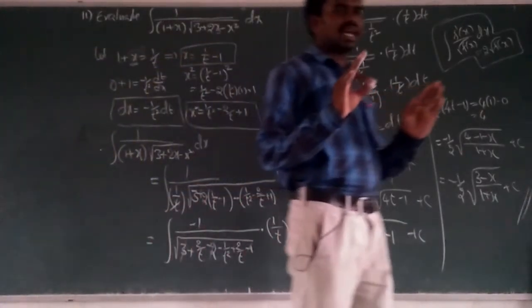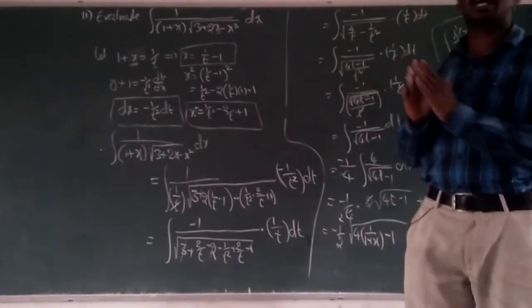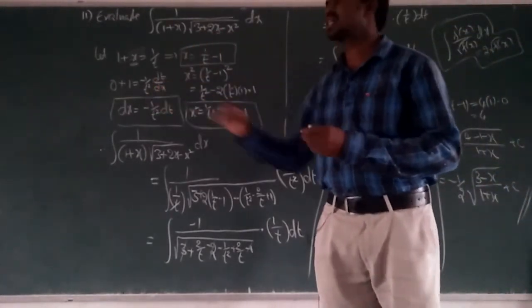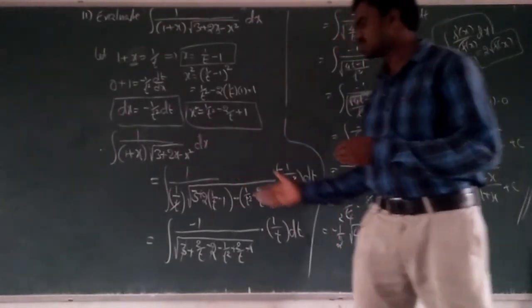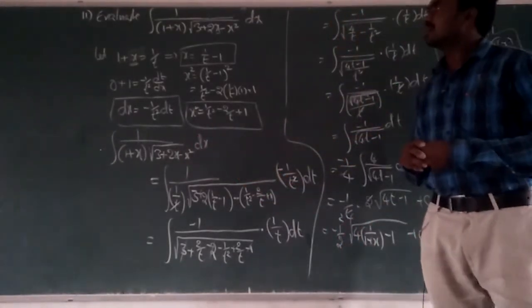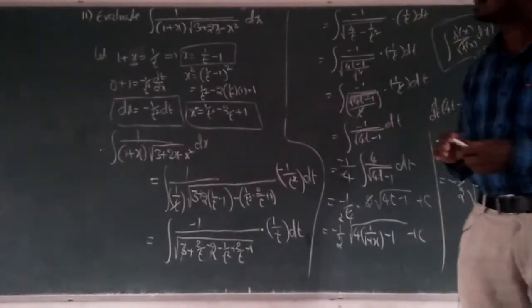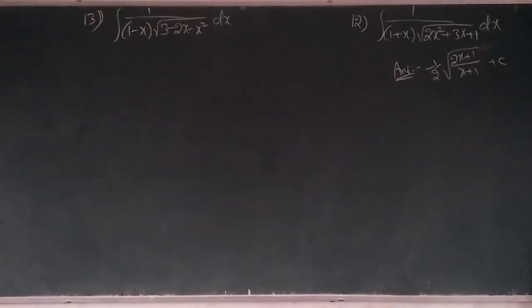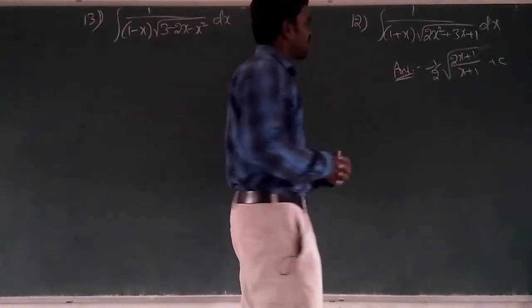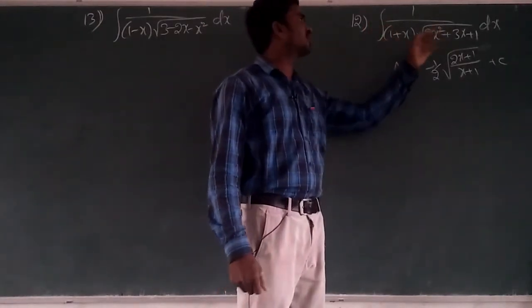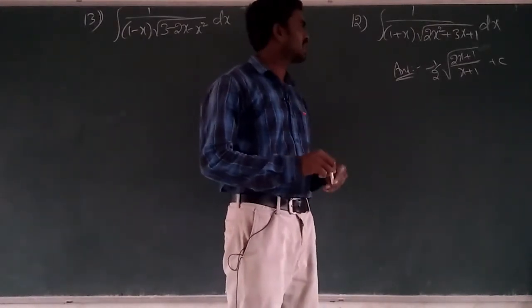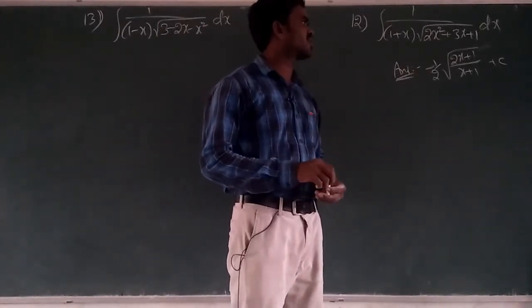Just first assume 1 + x = 1/t, and from that write what is x, what is x². Do the differentiation with respect to x to get dx = −1/t² dt. Take the question, substitute values, and you do it to get the answer. One more question in this matter: ∫ 1/((1 + x) · √(2x² + 3x + 1)) dx. The answer will be −1/2 × √((2x + 1)/(x + 1)) + C.